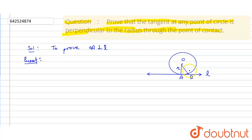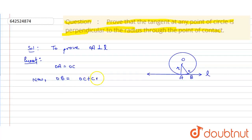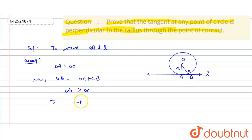The cutting point is C. So we have OA equals OC, because both are the radius. Now OB equals OC plus CB. Since something is added to OC, it means OB is greater than OC.